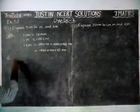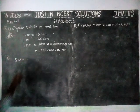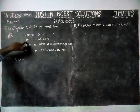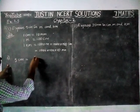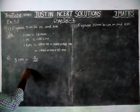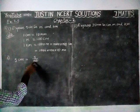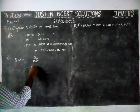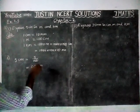First question: express 5 centimeter. So, 5 centimeter is equal to — we are going to convert into meter. 1 meter is equal to 100 centimeter. So, 5 divided by 100. Here we have two zeros, so we need two decimal places. So, 0.05 meter.